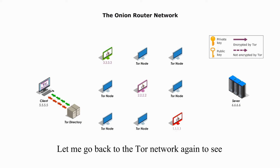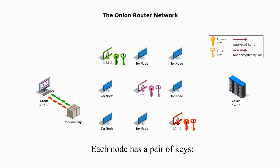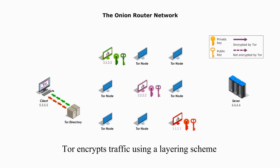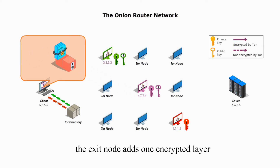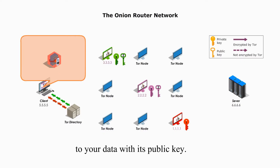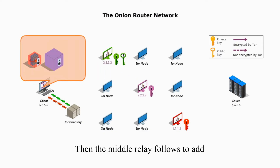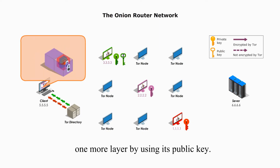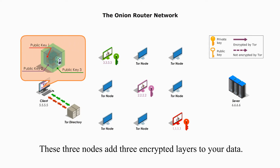Let me go back to the Tor network again to see how these three nodes help to encrypt and decrypt your traffic. A public key algorithm is used on the Tor network. Each node has a pair of keys, a public key and a private key. Tor encrypts traffic using the layering scheme, which is where the onion metaphor comes from. Before your data is ready to move, the Exit node adds one encrypted layer to your data with its public key, like wrapping your package with an onion layer. Then the Middle Relay follows to add one more layer using its public key. Then the Entry Guard node does the same thing, so these three nodes add three encrypted layers to your data.